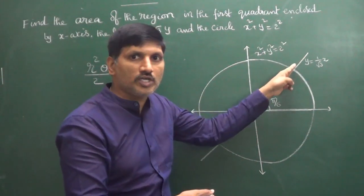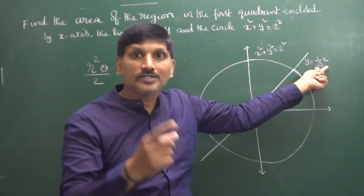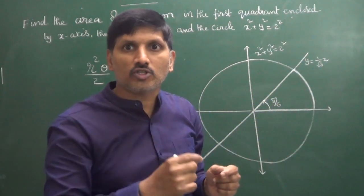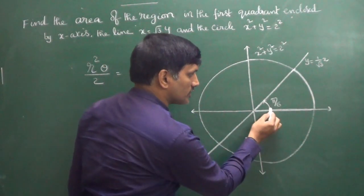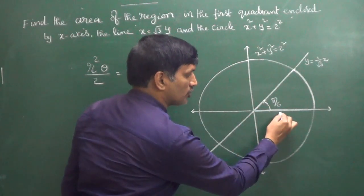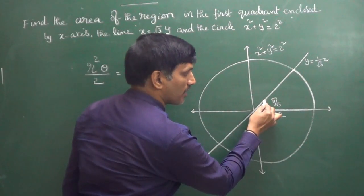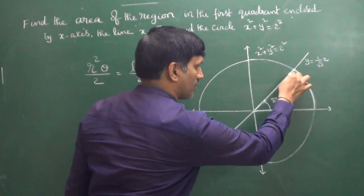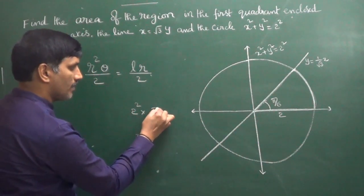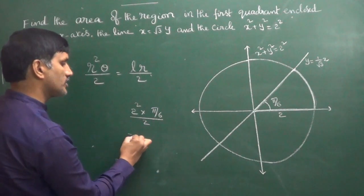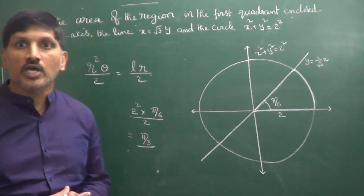The line equation x = √3·y can be written as y = (1/√3)·x, whose slope is 1/√3. Slope = 1/√3 means tan θ = 1/√3, so θ = π/6. We know the radius of the circle is 2 and the angle is π/6, so the sector area = r²θ/2 = (4·π/6)/2 = π/3. That's how we can proceed in objective exams.